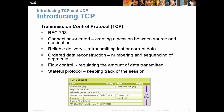TCP is governed by RFC-793 — you can look that up online for full details. It is connection-oriented, creating a session between the source and destination. It has reliable delivery, retransmitting lost or corrupt data. If no response is received, it sends the packet again. It also has flow control to regulate the amount of data transmitted, and it's a stateful protocol that keeps track of the session.